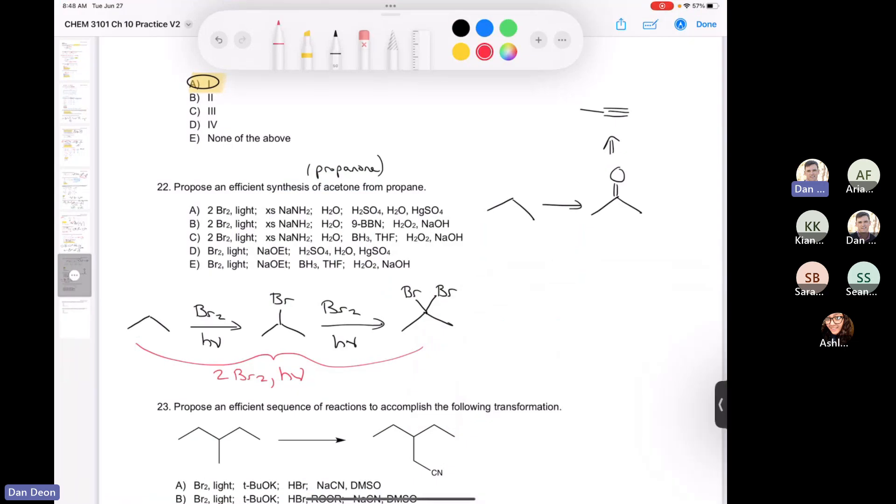Alright, so continuing on with question number 22. If it says two bromines in light, it just means that you can brominate twice. So you brominate once, add the first bromine, and then you do it a second time and you end up with two bromines.